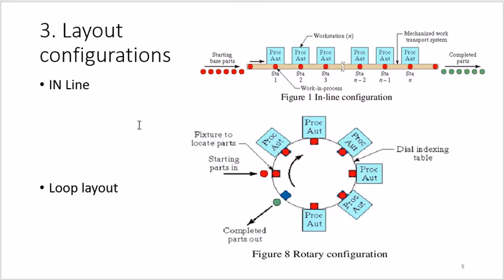The third component is layout configuration. There are four major types of layouts. The first is inline layout, where workstations are arranged in a single line. The second is loop layout, where workstations are arranged in a circular form. These two are very basic and you have already studied them.